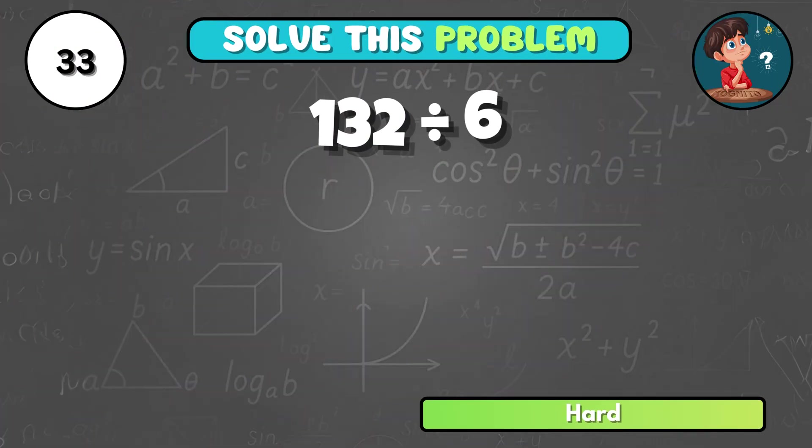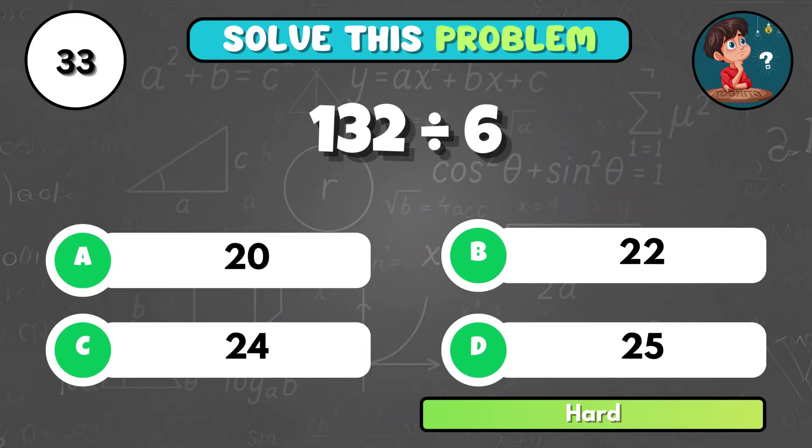Can you calculate 132 divided by 6? It equals B, 22.